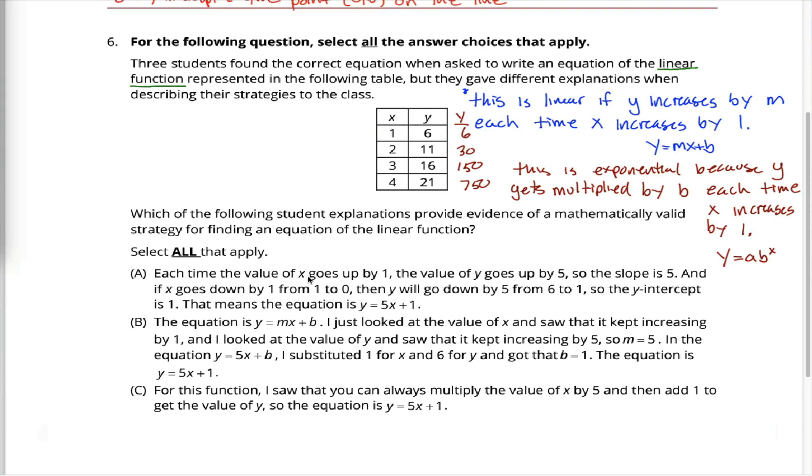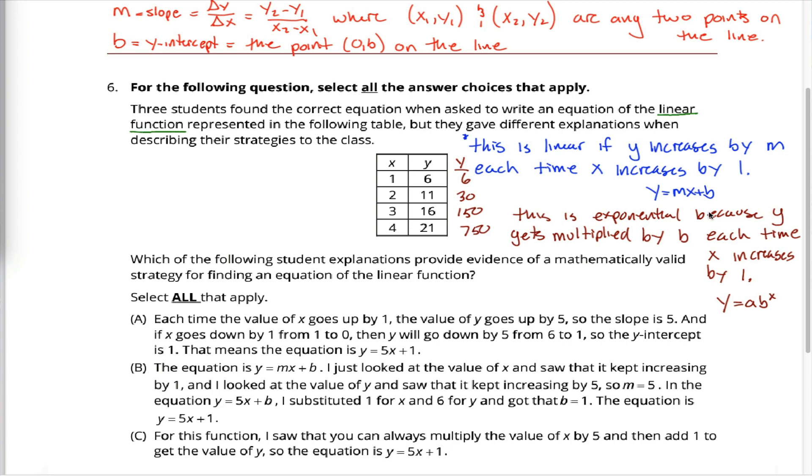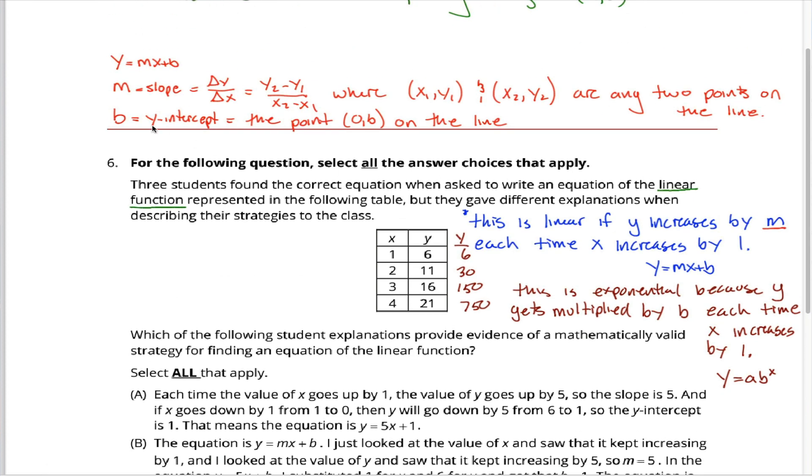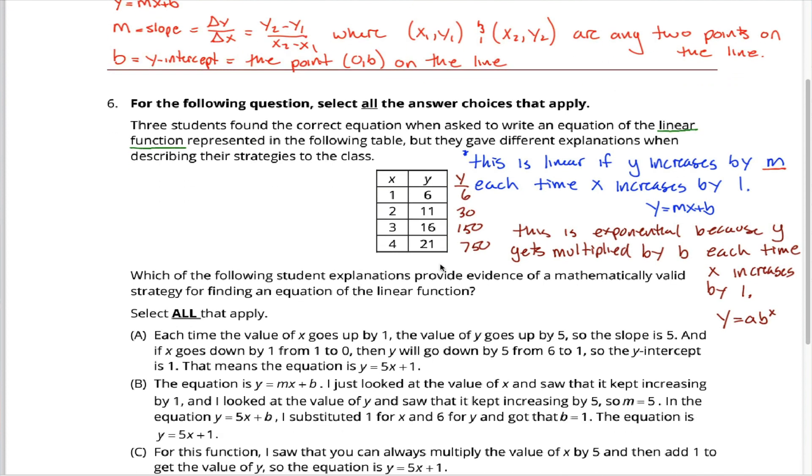This first one: each time the value of x goes up by 1, the value of y goes up by 5, so the slope is 5. One interpretation of the slope is just how much the y-coordinate increases by each time the x-coordinate increases by 1. The student's using that interpretation to figure out that m is 5. Great. Halfway home. All we need to know now is the value of b, the y-intercept. The value of b, the y-intercept, is just the point (0, b) on the line. In other words, it's the y-coordinate when the x-coordinate equals 0. Unfortunately, that's not given in this table here.